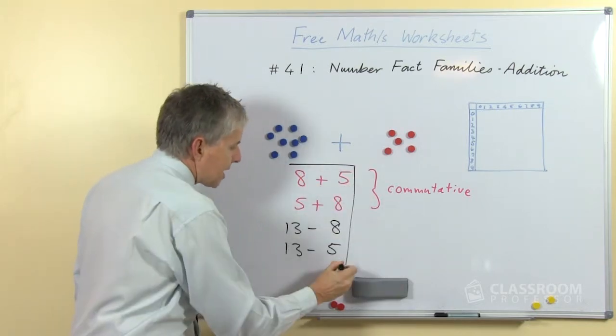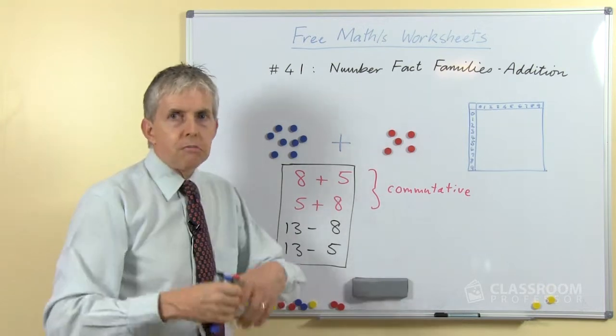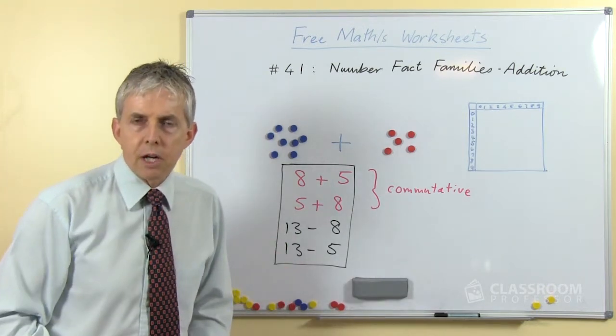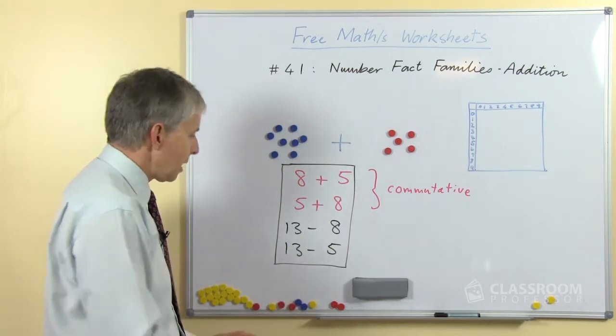And so there's a set of 4 number facts that use the same 3 numbers over and over again: the 5, the 8, and the 13. And so we call that a number fact family.